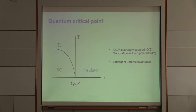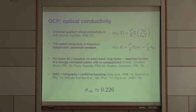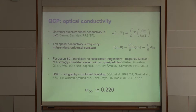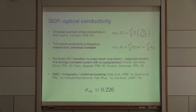Besides critical exponents, there's another interesting critical property: the quantum critical conductivity. The question is whether we can see signatures of critical behavior in the optical conductivity — zero momentum, finite frequency conductivity as a function of temperature. It was shown by Damle and Sachdev in the 90s that in two dimensions, by scale invariance, this conductivity exhibits a universal form: the universal quantum of conductance times a universal scaling function of omega over T, which is a universal property of the phase transition, material-independent in the quantum critical regime.